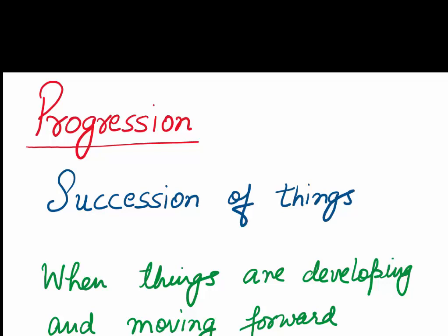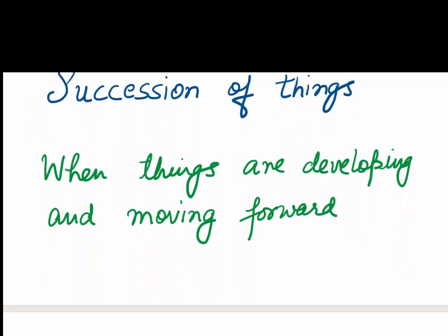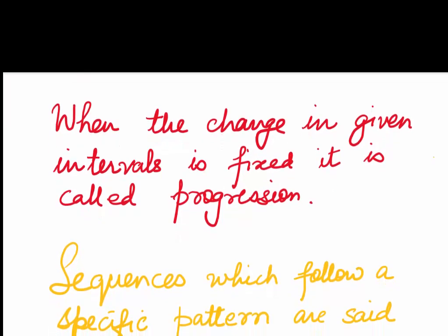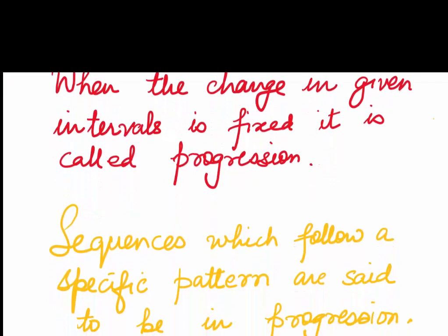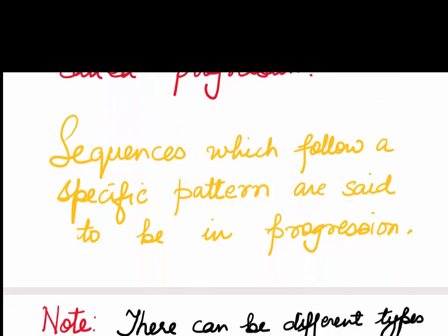Progression literally means succession of things, or in other words, when things are developing and moving forward. Mathematically, we say when the change in given intervals is fixed, it is a progression, or sequences which follow a specific pattern are said to be in progression.